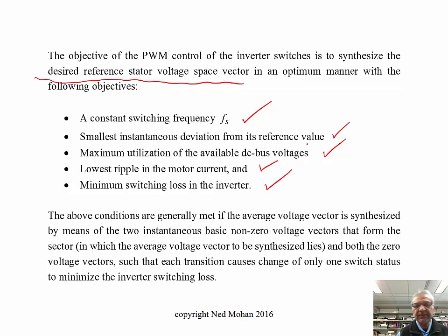We want to maximize the utilization of the available DC bus. We want to also have the lowest ripple in the motor current, and minimize switching loss in the inverter. So all these things are achieved if, of course, there may be certain conditions where how you synthesize that desired voltage space vector may be different.